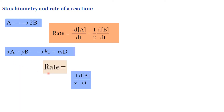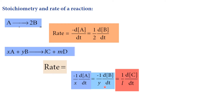The rate equals minus 1 by x, dA concentration divided by dt. That is minus 1 by y, where the rate of change of concentration of B with respect to time.